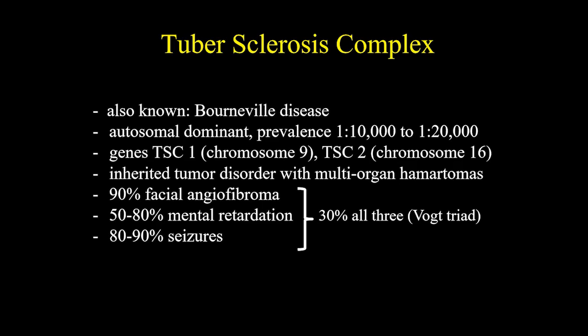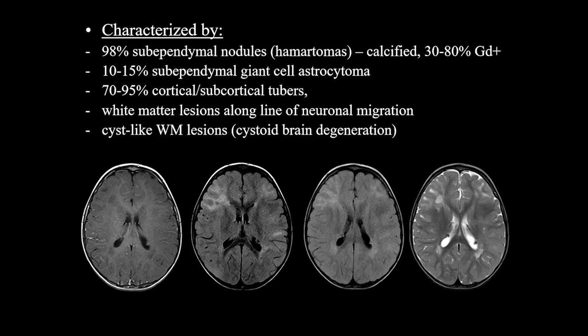The next phacomatosis we are going to talk about is tuberous sclerosis complex, also known as Bourneville disease. It is an autosomal dominant with prevalence of 1 per 10,000 to 20,000 persons. The gene abnormality is located in chromosomes 9 and 16. It is a disorder with multi-organ hamartomas. The classic triad is only found in 30% of patients and consists of facial angiofibroma, mental retardation, and seizure. Tuberous sclerosis is characterized by subependymal nodules, or hamartomas, found in almost 100% of cases; they can be calcified and can show contrast enhancement.